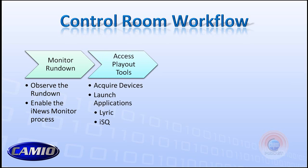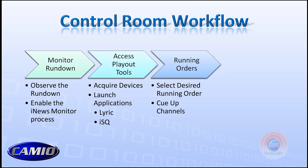From there, they need to access the playout tools — meaning they need to acquire the devices. Do they have their graphics playout devices? Do they have access and control? Because they may be in a shared environment. From there, they need to launch the proper applications, which could be Lyric, X-Clips, or ISQ. Then they want to select the desired running order in their playback controller and use it to queue up all the channels — this could be ISQ, Control Air, or Command. They want to make sure the running orders are available and their graphics are queued and ready for the show.